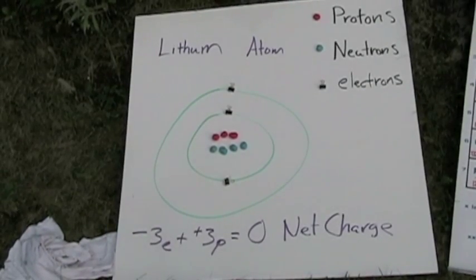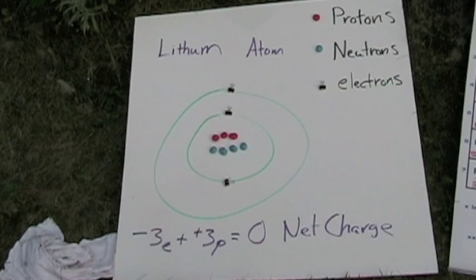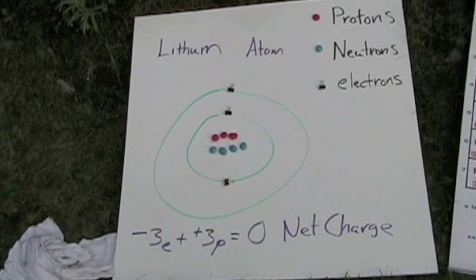Here's the lithium atom Bohr model, and you can see up in the upper right-hand corner how I have the red Play-Doh for protons, the blue Play-Doh for neutrons, and the binder clips that represent electrons. You can use any of your household items as long as they are safe.